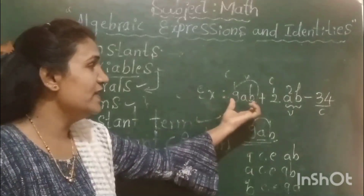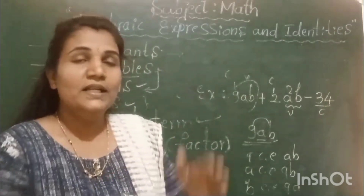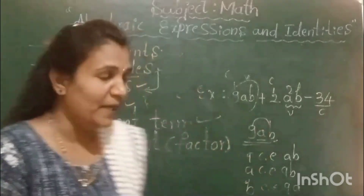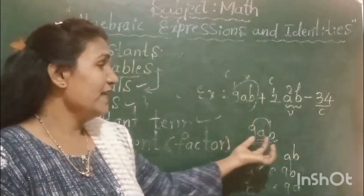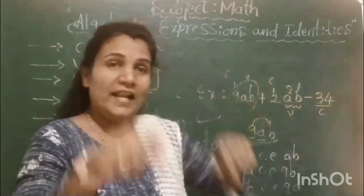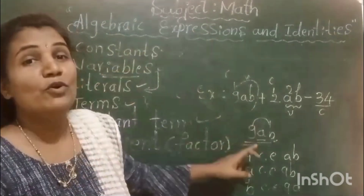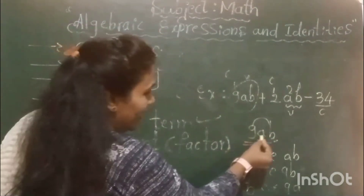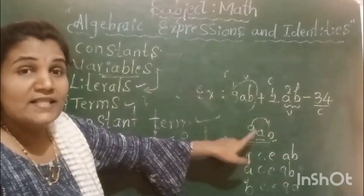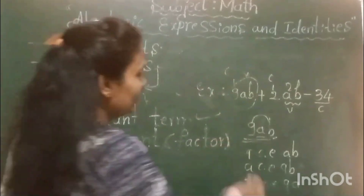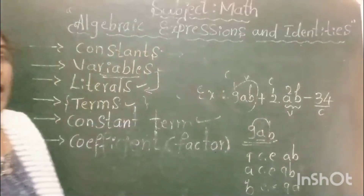This 9ab is a monomial and here I am taking only this term of the whole algebraic expression. Coefficient is nothing but each factor of a term in an algebraic expression. In 9ab: 9 is the coefficient of ab, a is the coefficient of 9b, and b is the coefficient of 9a.